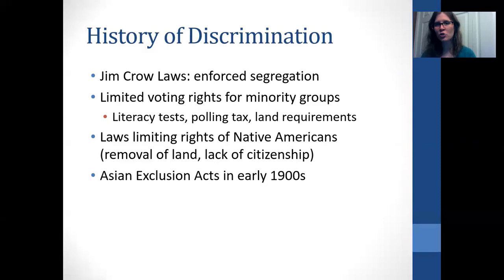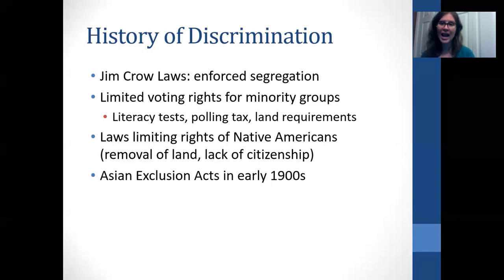There were also Asian exclusion acts in the early 1900s. It wasn't until the mid-1960s that Asians were fully able to immigrate to the United States. The Chinese Exclusion Act in the late 1800s and early 1900s essentially prevented Chinese people from immigrating, and those already in the U.S. had to carry documentation at all times — reminiscent of how Jews were treated in World War II. The U.S. has a really bad history of discriminatory behaviors, sometimes comparable to countries we've always viewed as worse than America.